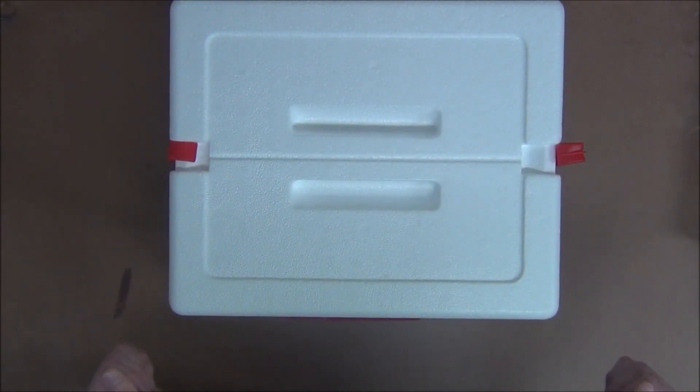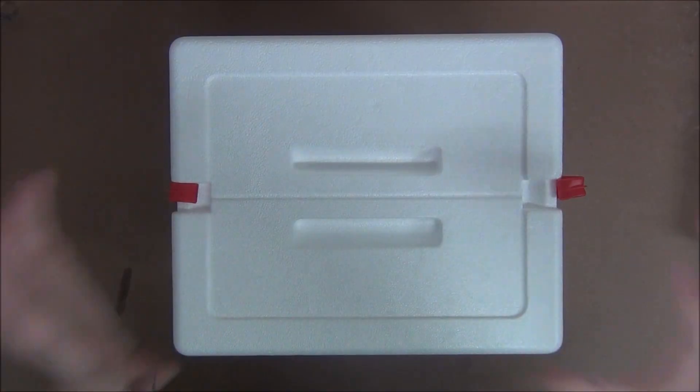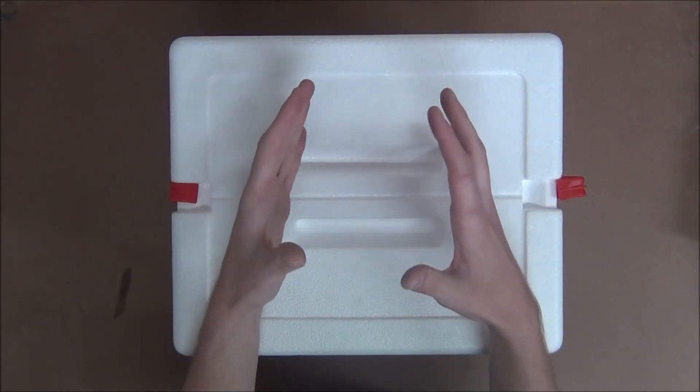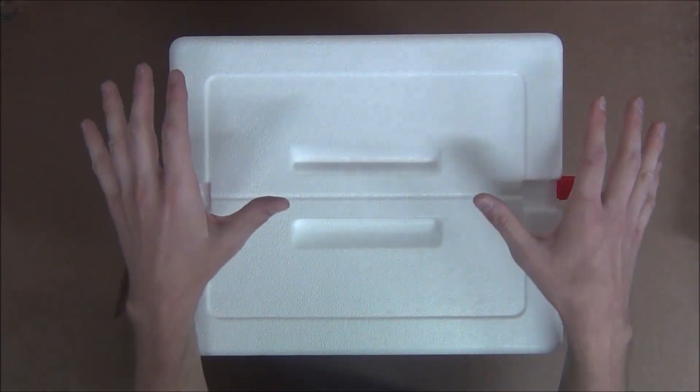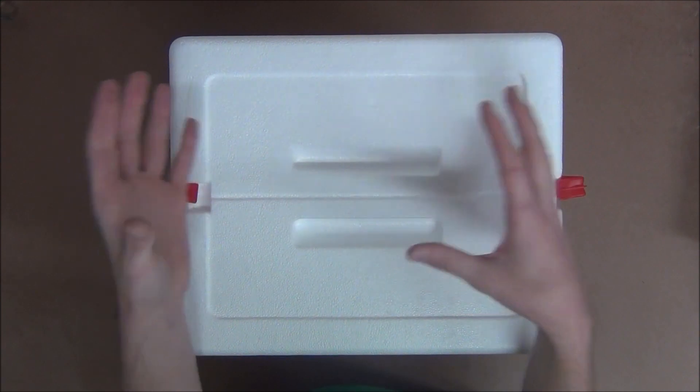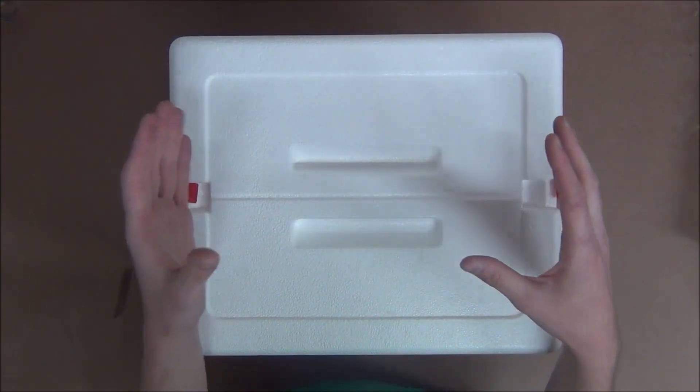So to begin, the first thing you're going to need to get is a small foam cooler like this one. Five bucks at Walmart. In order for this to be the most efficient it can be, you'll want to find the smallest cooler that you can find that is still large enough to fit all of your eggs. It doesn't necessarily have to be foam. You could get a plastic cooler, but since foam is the cheapest, that's what I went with.